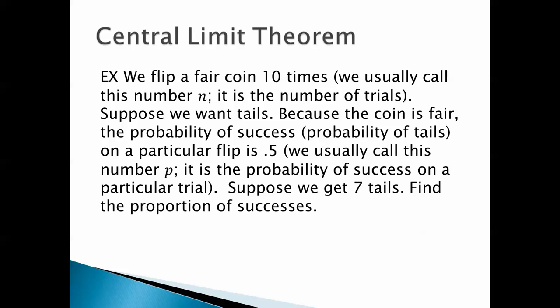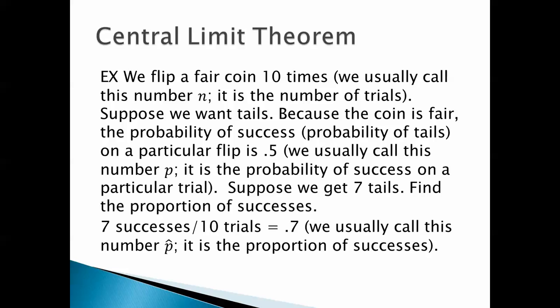Suppose we get 7 tails. Find the proportion of successes. Well, 7 successes in 10 trials is 0.7. We usually call this number p-hat — that little arrowhead above the p. We pronounce that p-hat. p-hat is the proportion of successes, and in this case that's 0.7. So the probability of success in a particular trial is p, while p-hat is the proportion of successes in n trials.